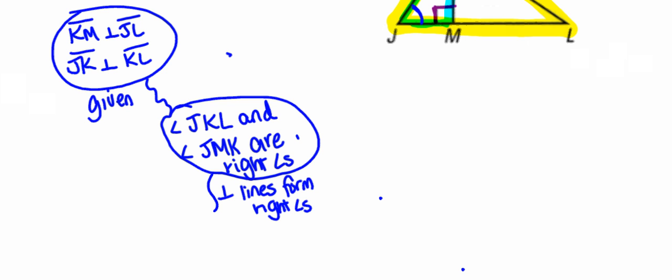And since I know all right angles are congruent, I can go ahead in my next statement and conclude that angle JKL must be congruent to angle JMK.